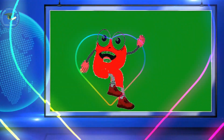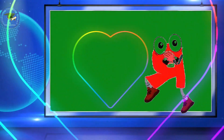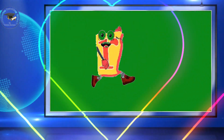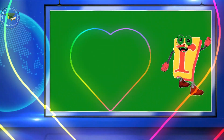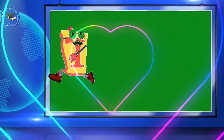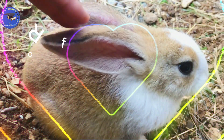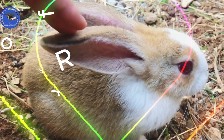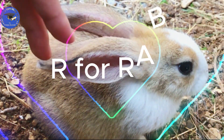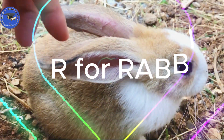Hello baby, are you ready to learn? I'm the letter R — capital R and small r. You spell my name R. R for rabbit — R-A-B-B-I-T. Rabbit.